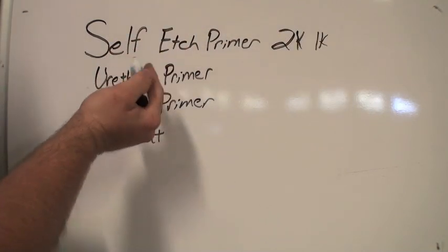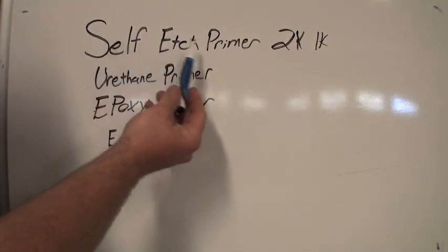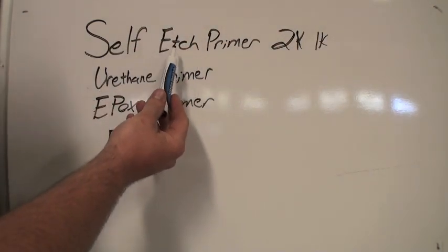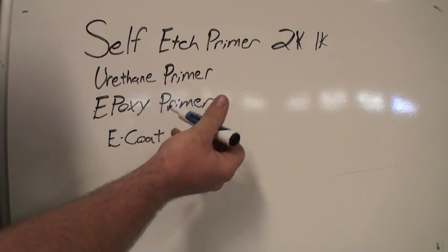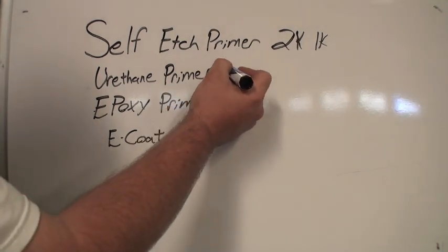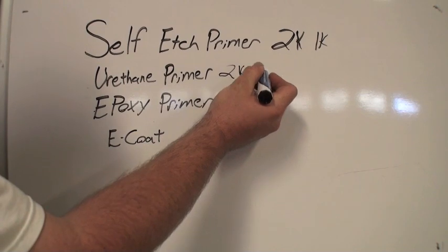You always want to top coat this with something, so you would top coat it with urethane primer. That's the normal primer that you would use. You can get that in the 1K or a 2K as well.